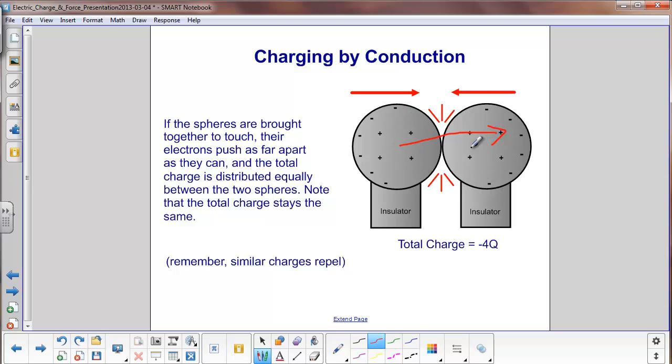However, note that they were equally distributed between the two spheres. This one has 6 negative charges. This sphere also has 6 negative charges.